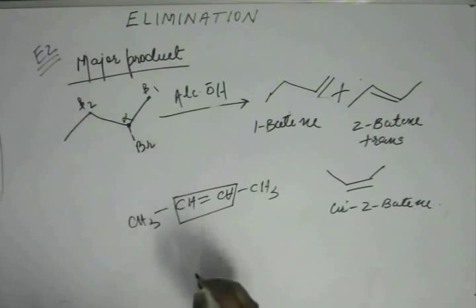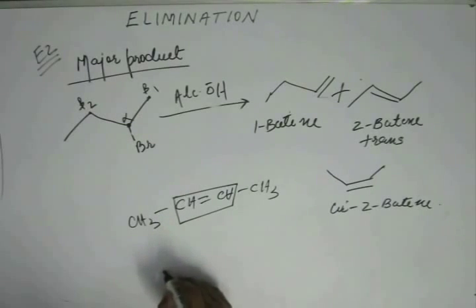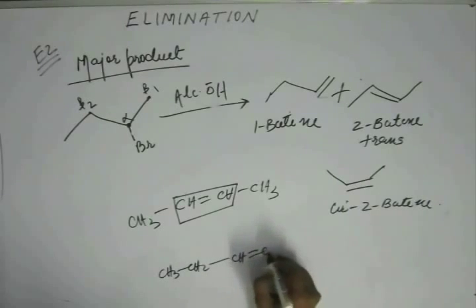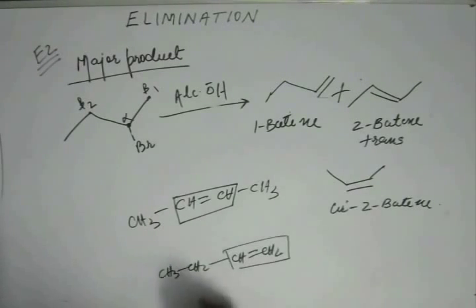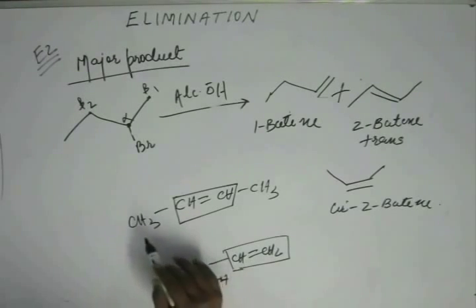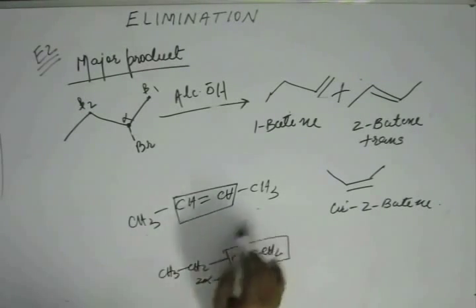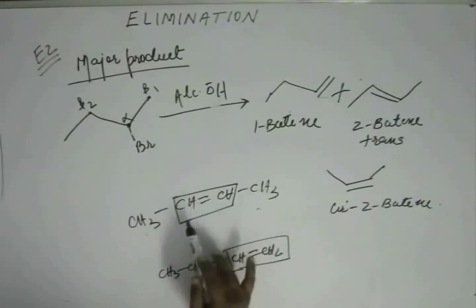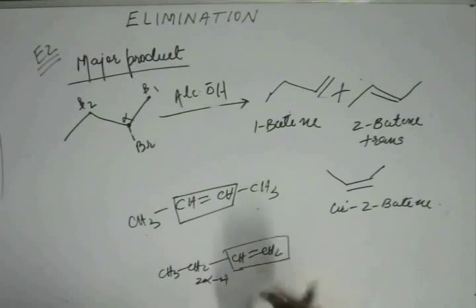For 1-butene, we have an ethyl group on one side of the alkene and nothing on the other side. From the ethyl group we get only 2 alpha-hydrogens, whereas 2-butene has 3 + 3 = 6 alpha-hydrogens. So the alpha-hydrogen count is greater in 2-butene, making 2-butene more stable than 1-butene.